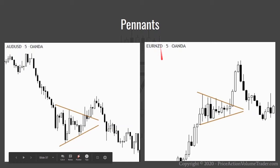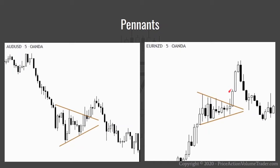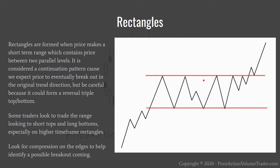Here's another example on the Euro / New Zealand Dollar five-minute chart. We're coming in a strong uptrend, price starts coiling in a pennant formation, and we get a very strong bullish close outside the pattern. We can apply a measured move and could have taken profits on that trade.